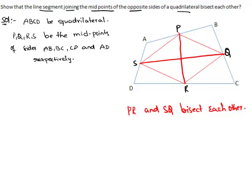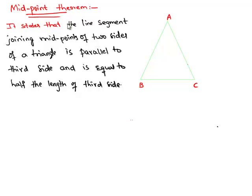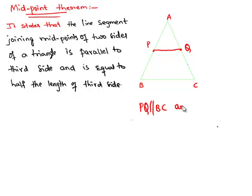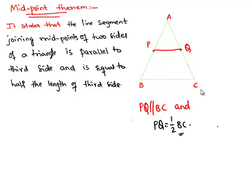According to the midpoint theorem, the line segment joining the midpoints of two sides of a triangle is parallel to the third side. That means, if P is the midpoint of AB and Q is the midpoint of AC, then the line segment joining P and Q is parallel to the third side BC, and the length of PQ is equal to half of BC. This is the statement of the midpoint theorem, and we will use this in our problem.